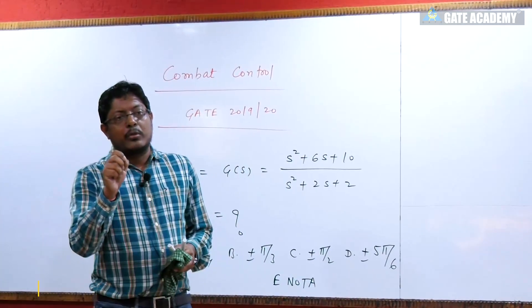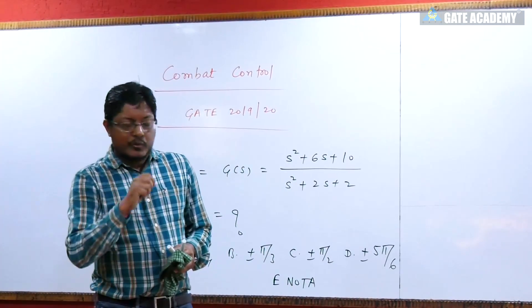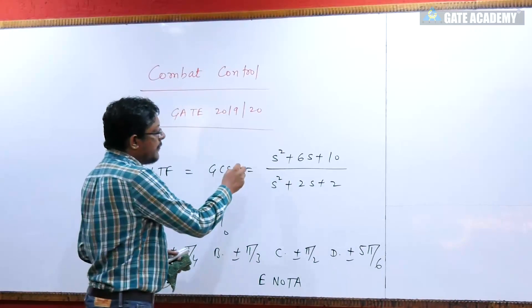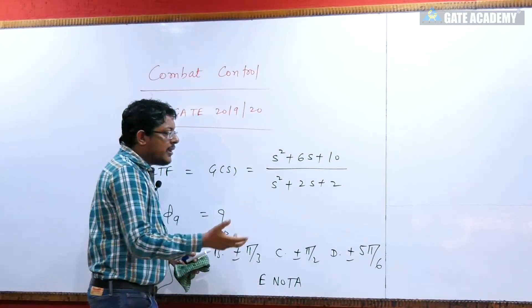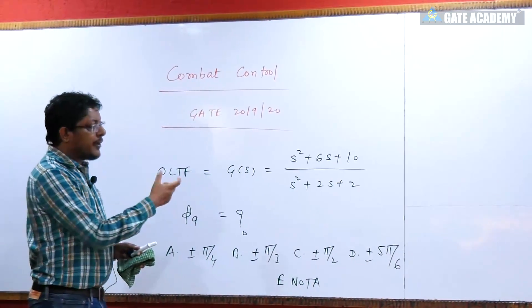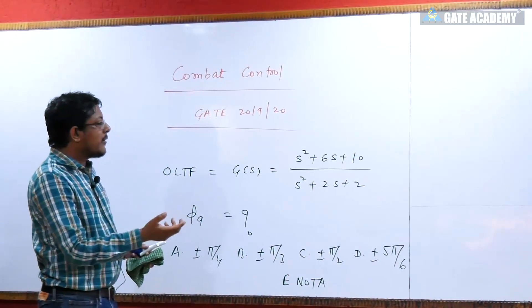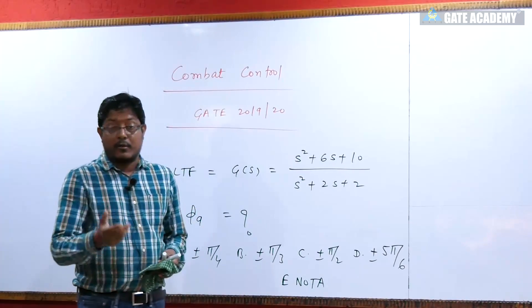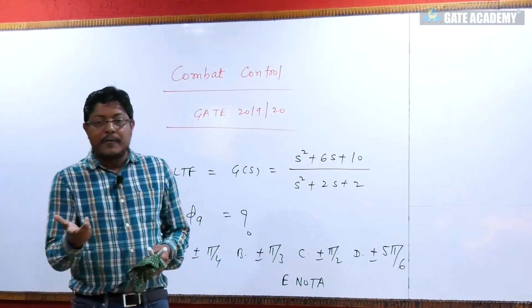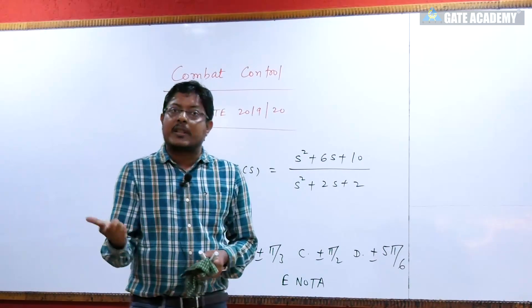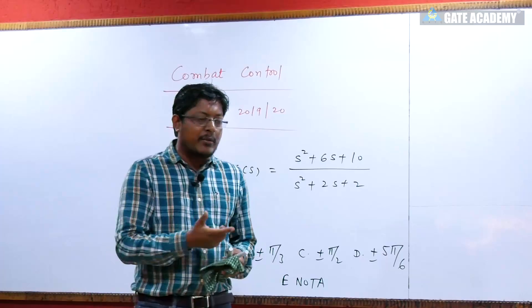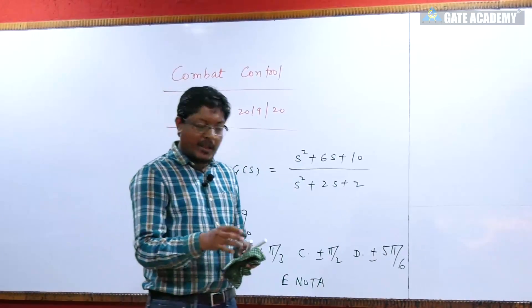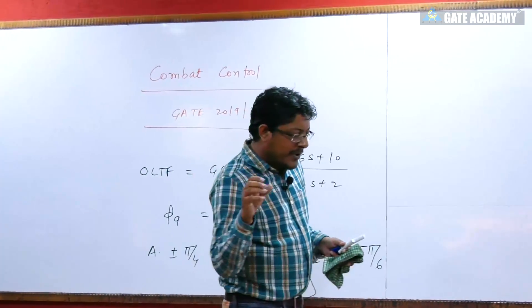If I talk about the question, some people asked: since K is not written, it will be 1, and the CLTF poles that form the root locus will not vary. So how will the root locus diagram be made? It will be a static system. Good concept - whatever reasoning you have given, your concept is good.